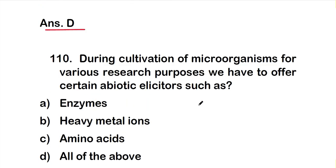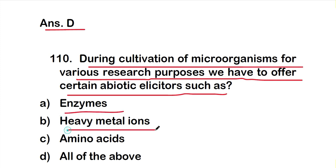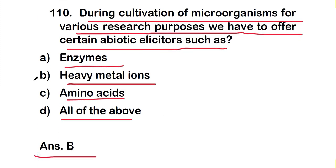Question 110: During the cultivation of microorganisms for various research purposes, we have to offer certain abiotic elicitors such as option A, enzymes; option B, heavy metal ions; option C, amino acids; or option D, all of the above. The right answer is option B, heavy metal ions.